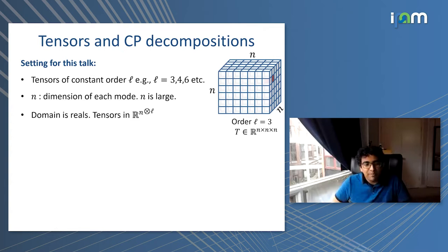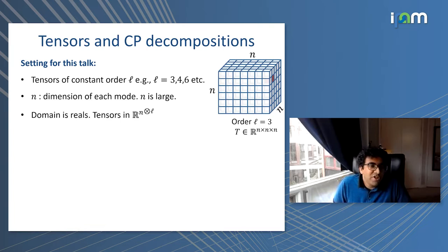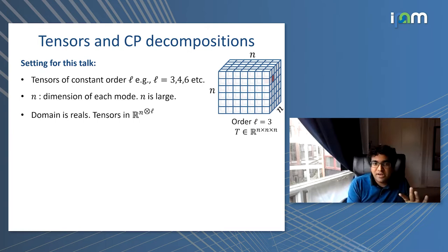Let me start by setting up notation so we're all on the same page. In this talk, we'll be talking about tensors over reals, focused on tensors of constant order, and I'll use L to usually represent the order of the tensor. Typically I'll be thinking about L as being 3, 4, or 6, but generally constant order. The dimension along each mode is going to be N, which is very large and tends to infinity. If you want things to be efficient, you want polynomial in N, but L is a constant.